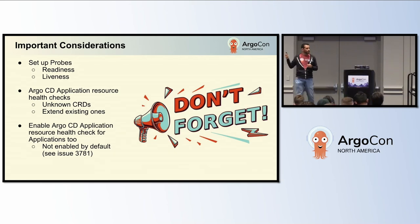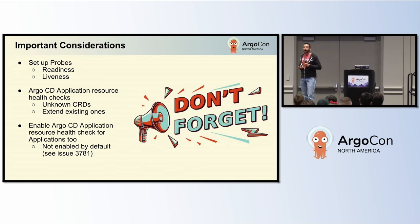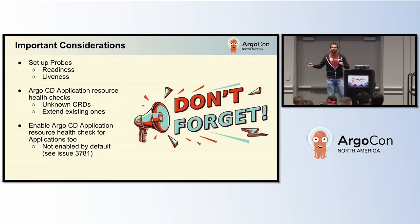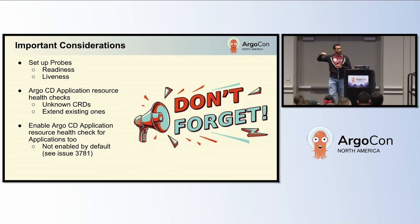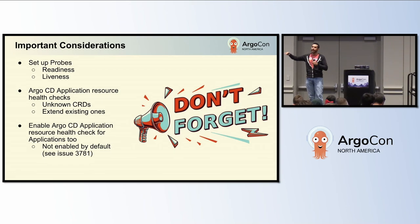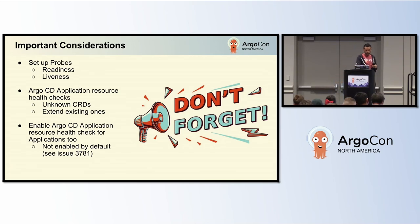The next important consideration is application resource health checks. Argo CD has built-in health checks for specific CRDs — for example, it has built-in health checks for Crossplane. But it doesn't know about everything; new things come out all the time and we wait for PRs for those health checks, so you may have to add health checks for unknown CRDs or extend existing ones. On top of that, you need to enable the Argo CD application resource health check for the Argo CD CRD itself. A lot of people are surprised to find out it's not enabled by default — there's an issue #3781 for that.